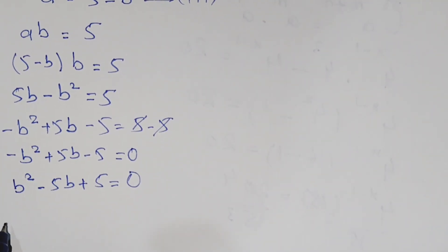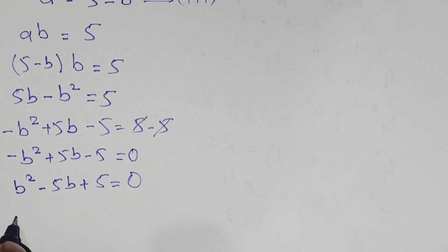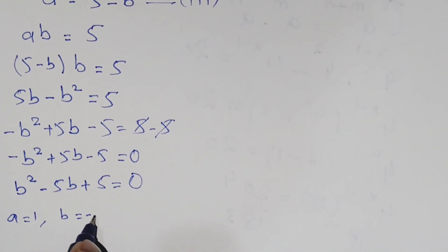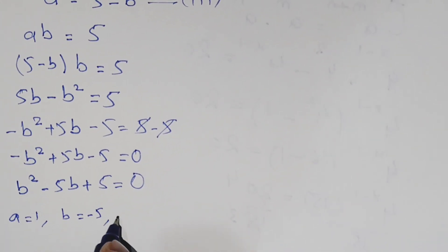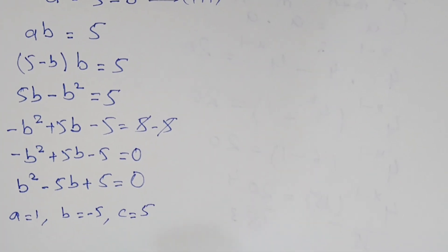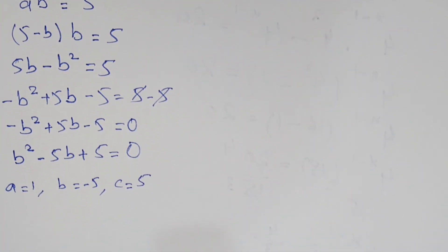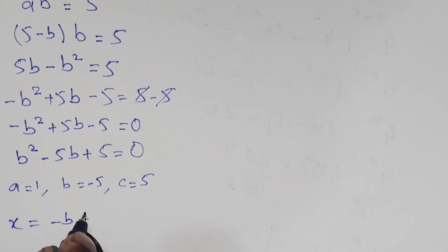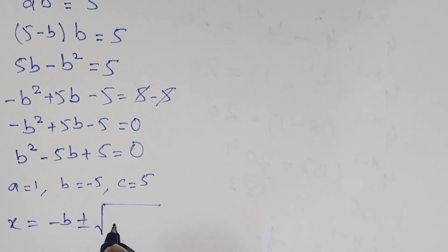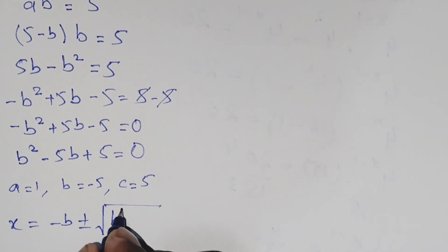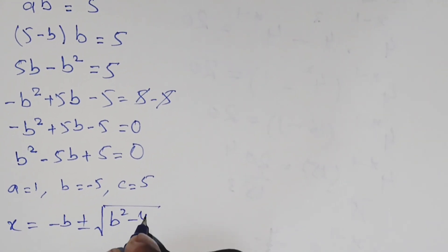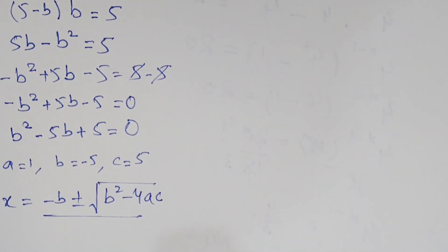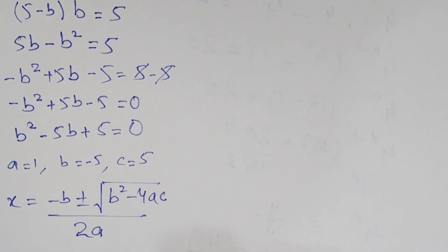Now we have to use the quadratic formula. Here a equals 1, b equals negative 5, and c equals 5. The quadratic formula is x equals negative b plus or minus the square root of b squared minus 4ac, all over 2a.